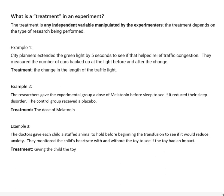Here are three examples. City planners extended the green light by five seconds to see if that helped relieve traffic congestion. They measured the number of cars backed up at the light before and after the change. The treatment here is the change in the length of the traffic light — they made that change and then waited to see if it was going to help.